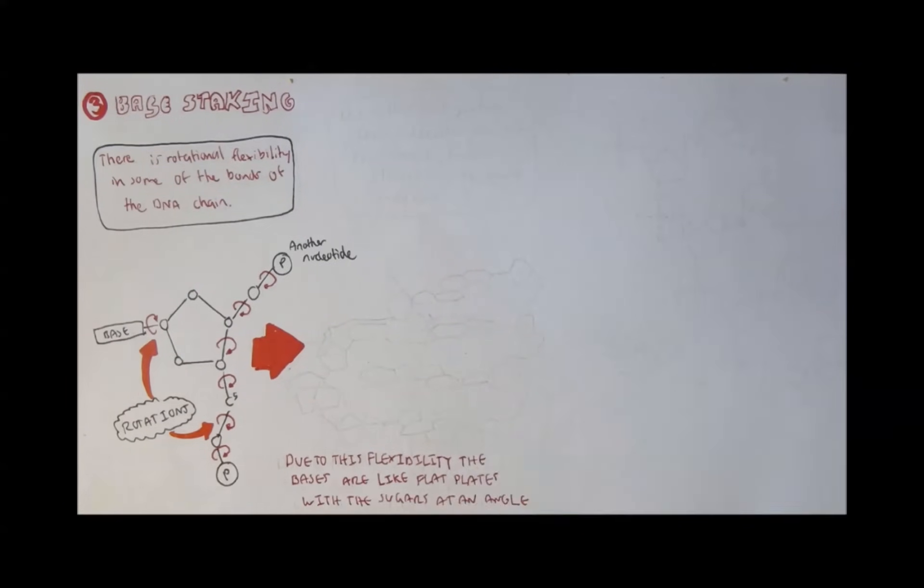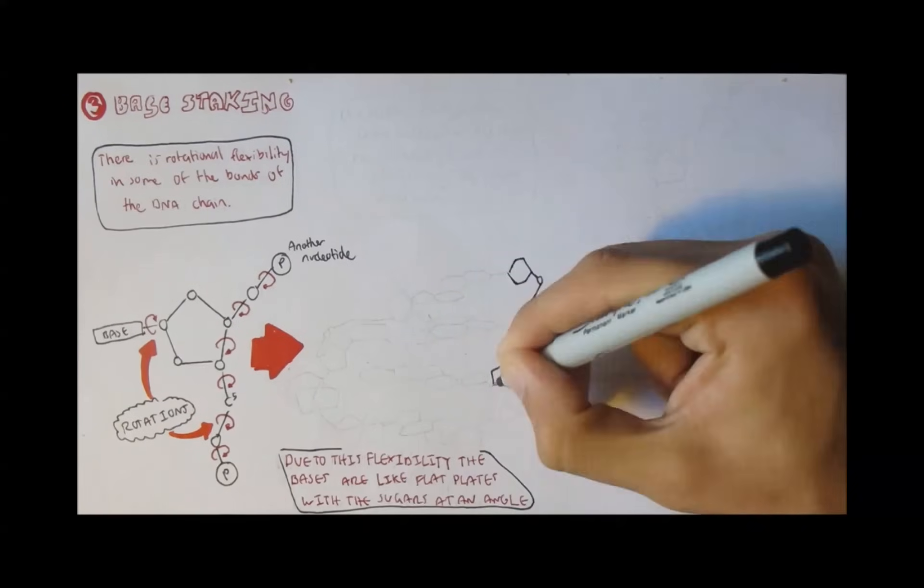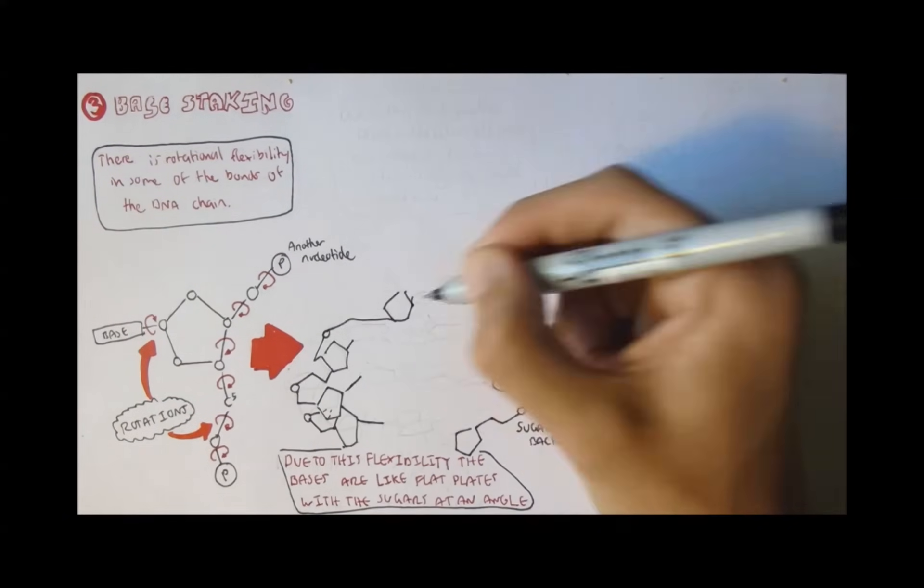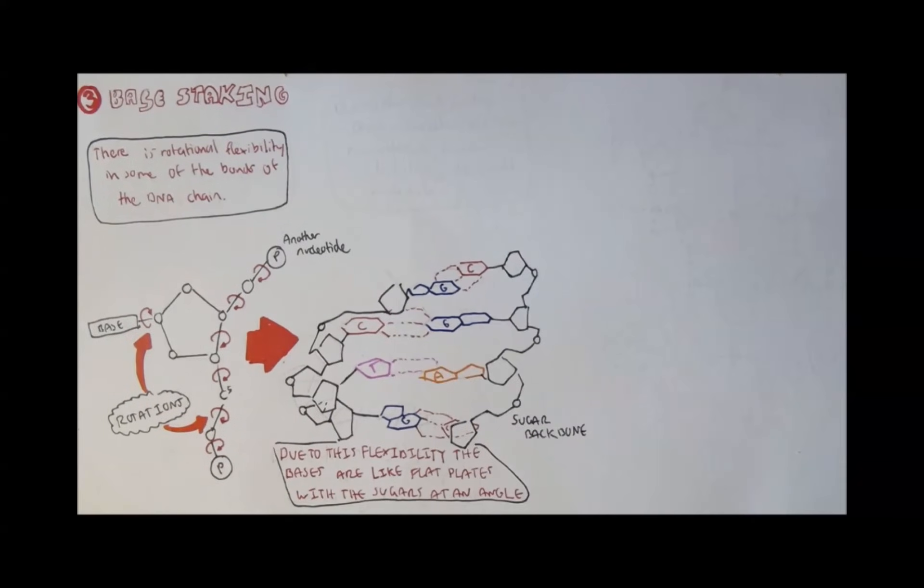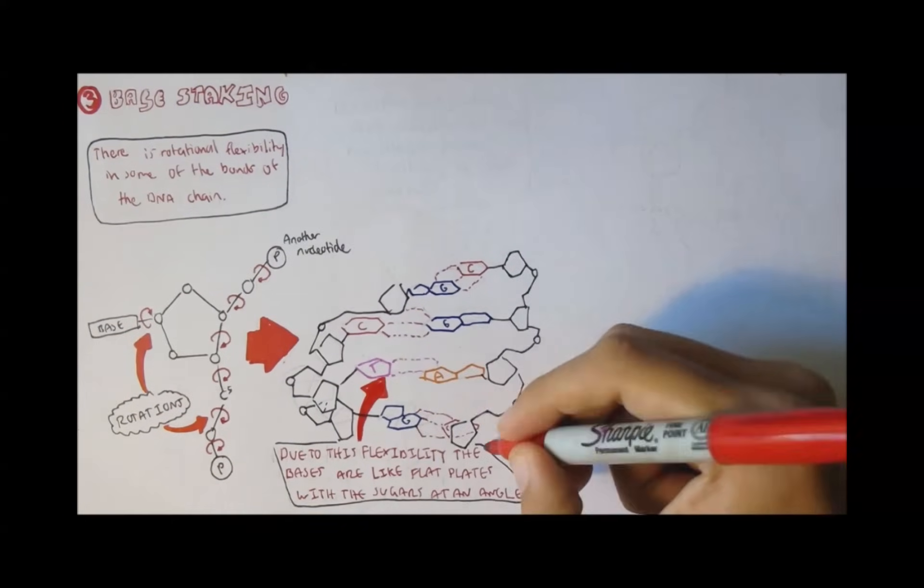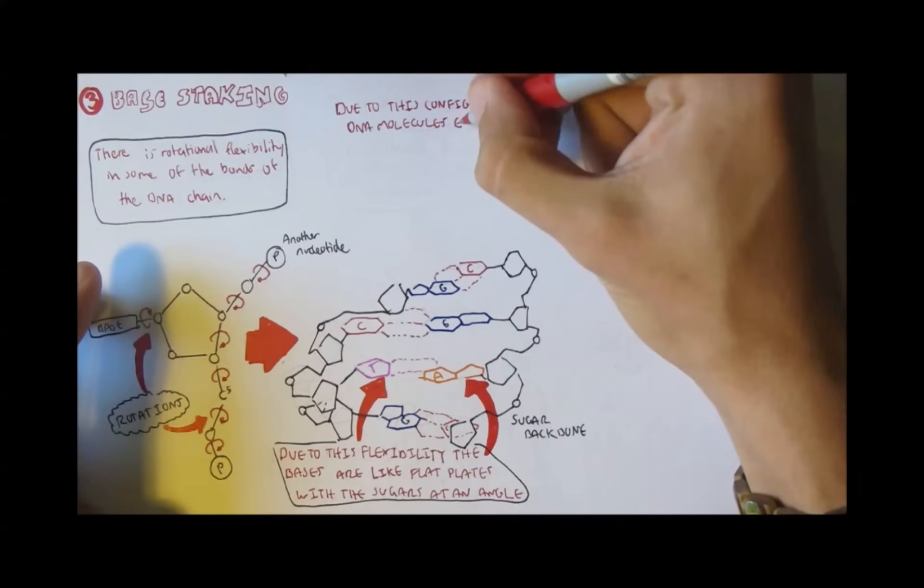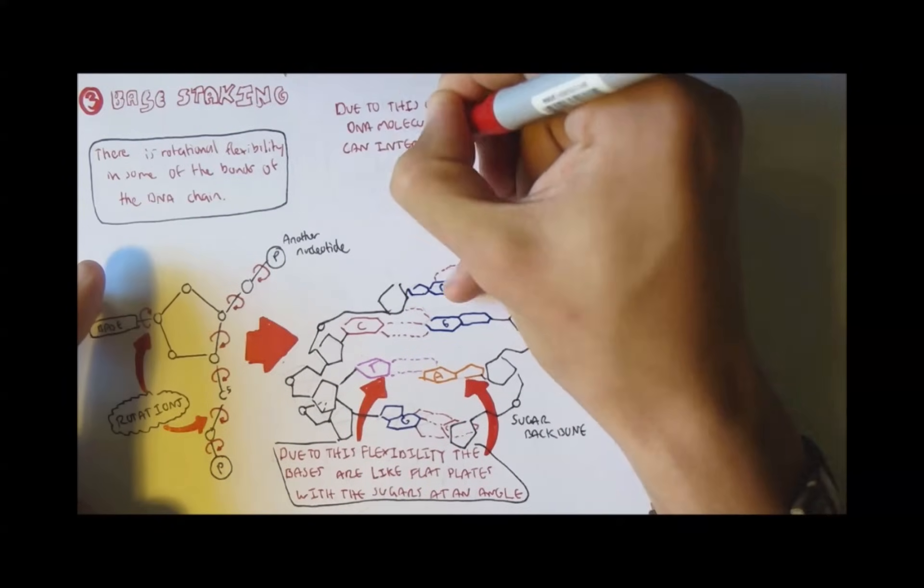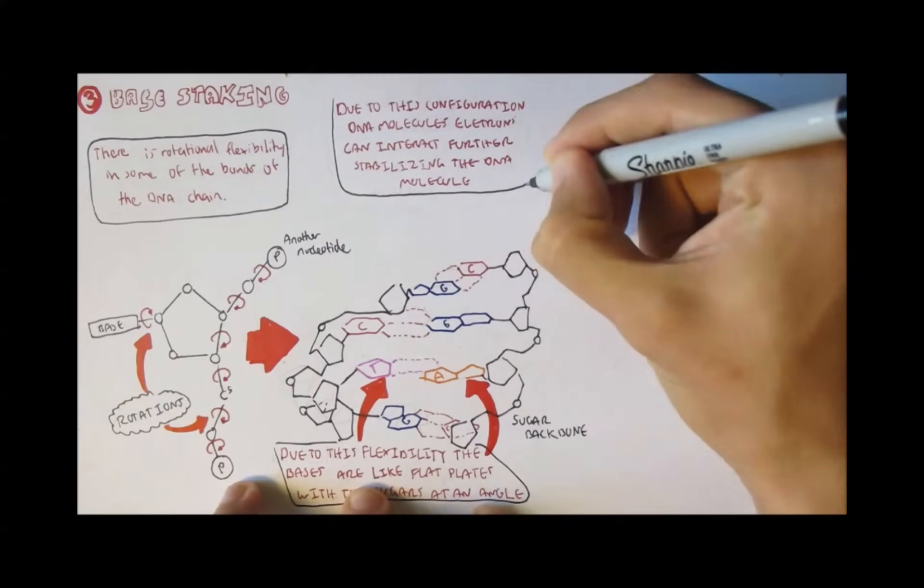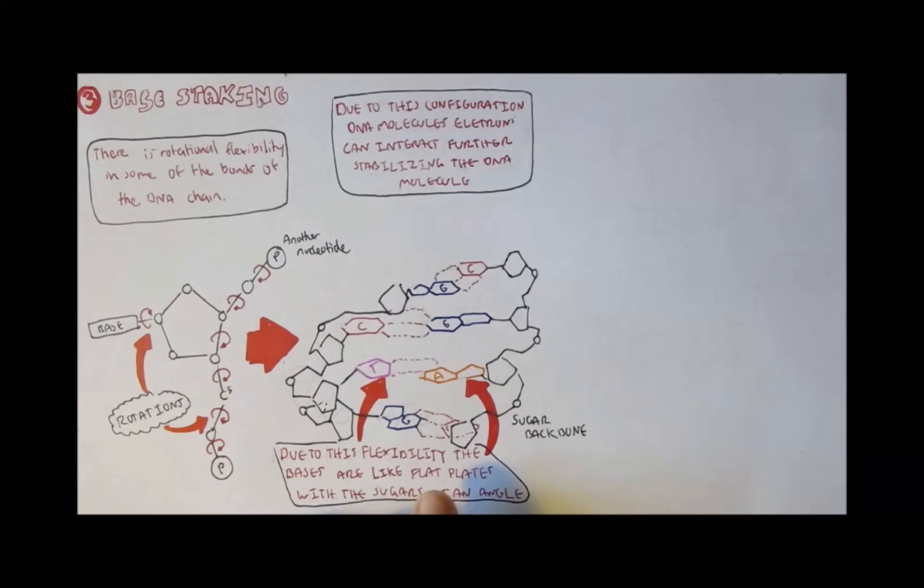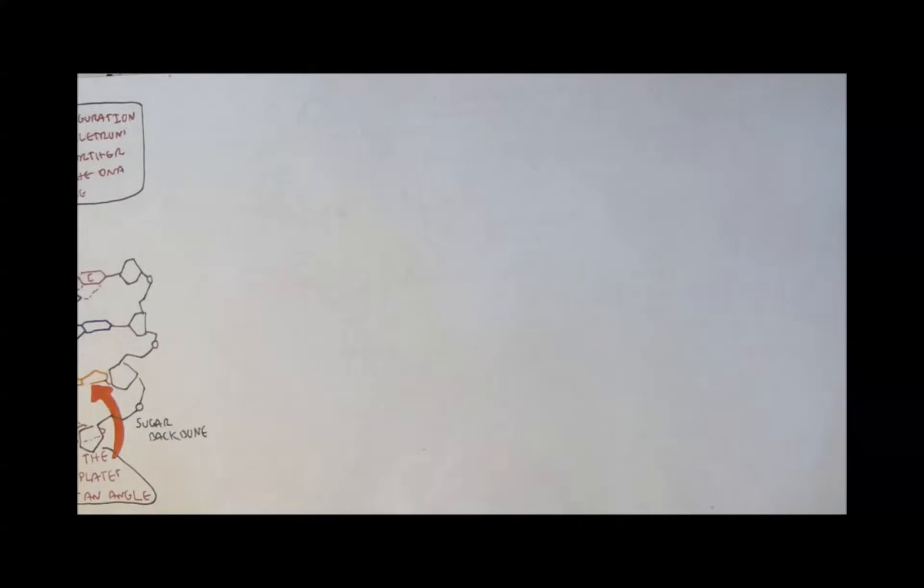A DNA strand looks something like this, a little bit messy, because of the rotations. So here we have the sugar backbone and here we have the bases. So as you can see, the DNA structure looks something like a staircase and all wobbled up. And that is why, through this configuration, the DNA molecules' electrons can interact with the atoms of other molecules around, further stabilizing the DNA structure.